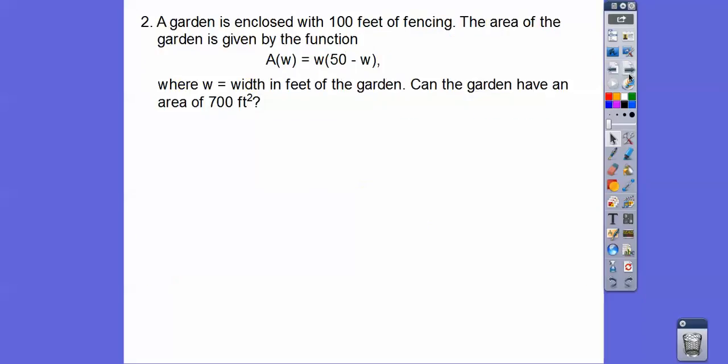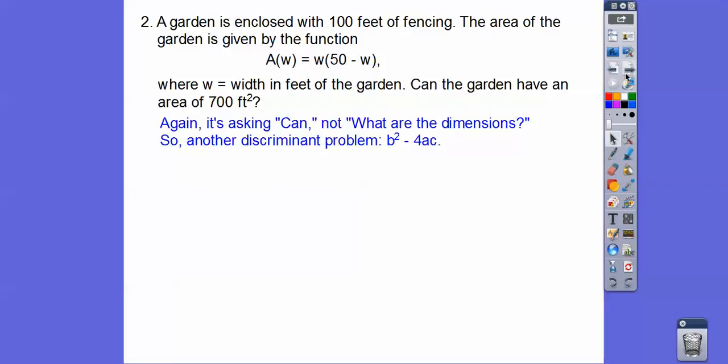All right, so here's another one. A garden is enclosed with 100 feet of fencing. The area of the garden is given by that function right there where w is the width in feet of the garden. So can the garden have an area of 700? So we're going to set this equal to 700 right there. So it's asking again, can it have an area? It's not asking what are the dimensions. So we're not solving for w. This is another discriminant problem.